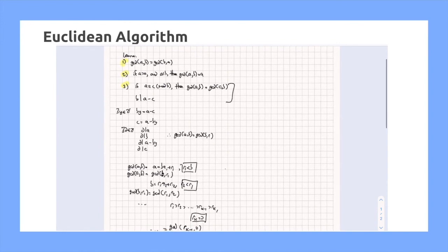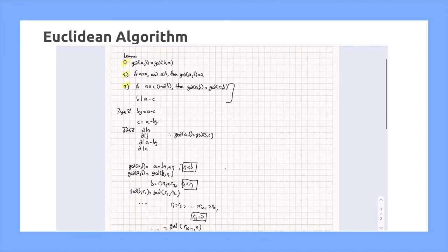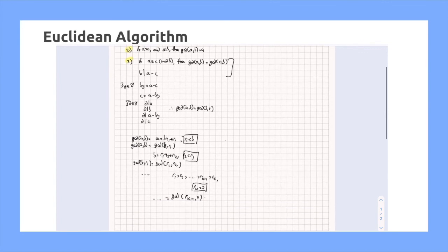If A is greater than 0 and A divides B, then we have simply that the GCD of RK minus 1, 0, is equal to RK minus 1. And this is the founding principle of the Euclidean algorithm.